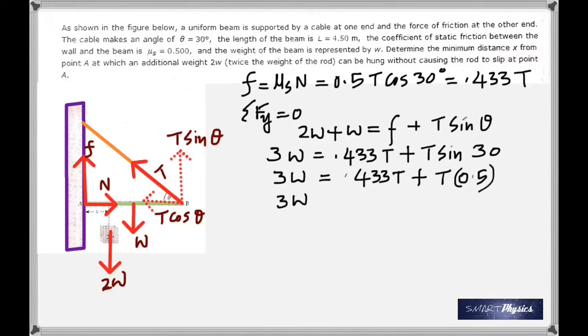Add these two, we are going to get 0.933 T. So that means the tension is 3.21 W. How? 3 divided by 0.933. So we got that equation from the first condition.